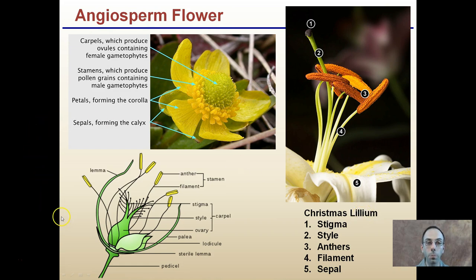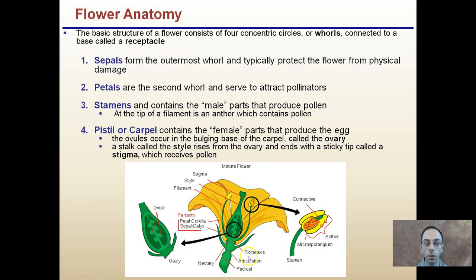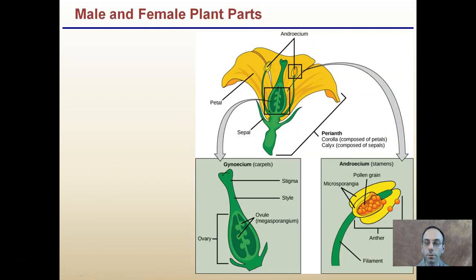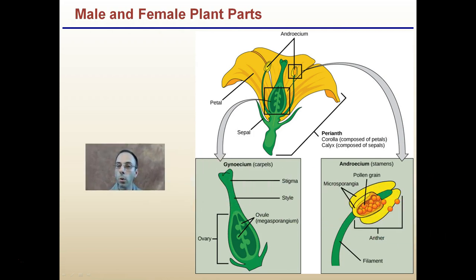Looking at the same flower anatomy on different images so you're not accustomed to just one single set image — you should be able to recognize the carpels, stamens, petals, and sepals on different flowers. On a Christmas lily, for example, you can see very distinctive pollen grains, the sticky stigma, and trace the path pollen needs to travel down to the ovule. Remember: the stigma, style, and ovary are all part of the female, while the pollen grains, microspores, anthers, and filaments are all parts of the male portions of the flower.